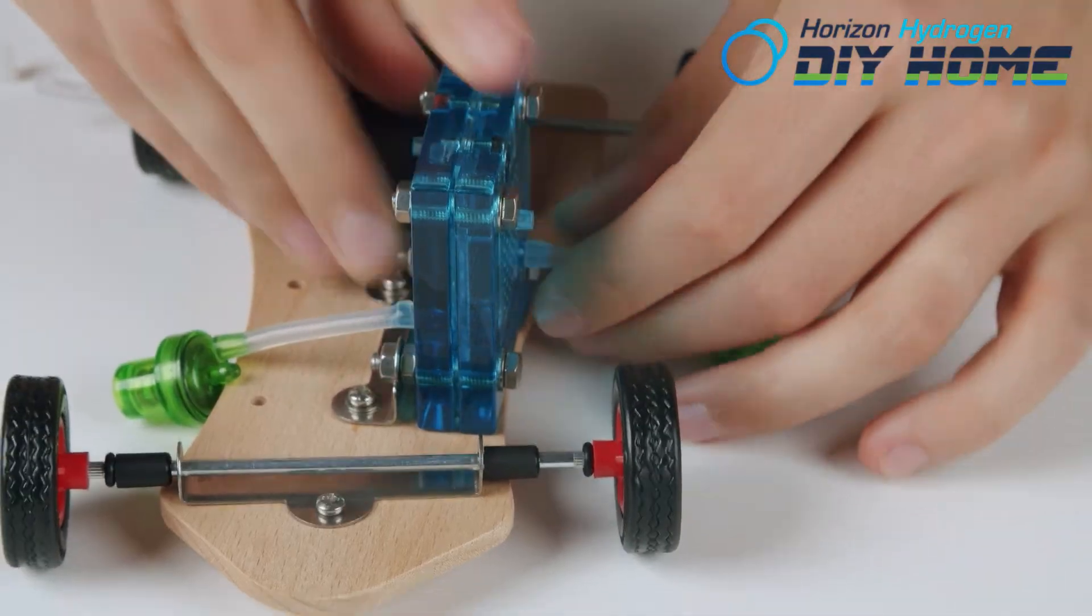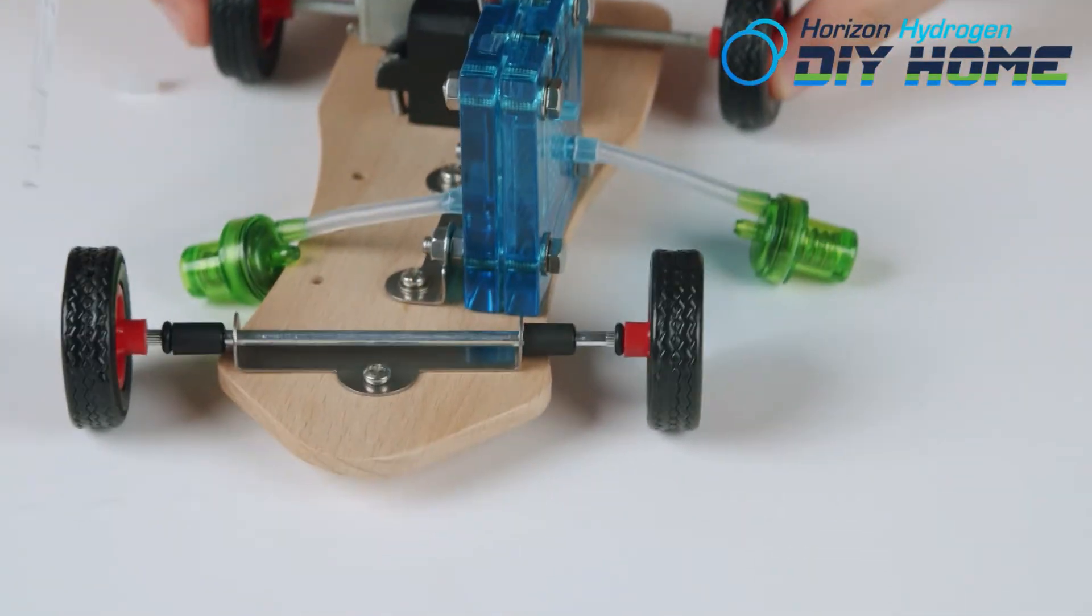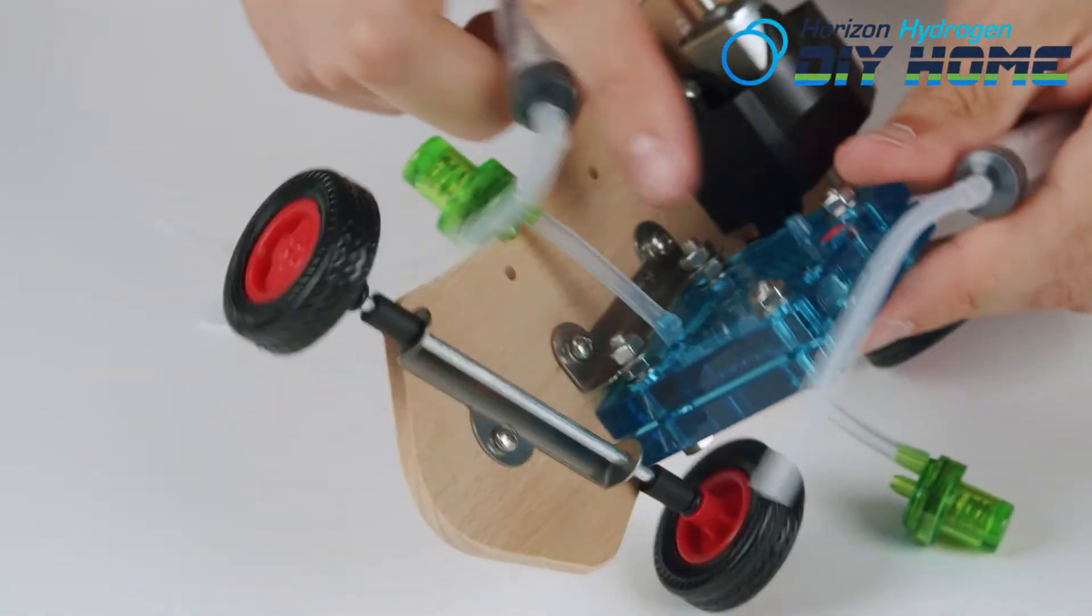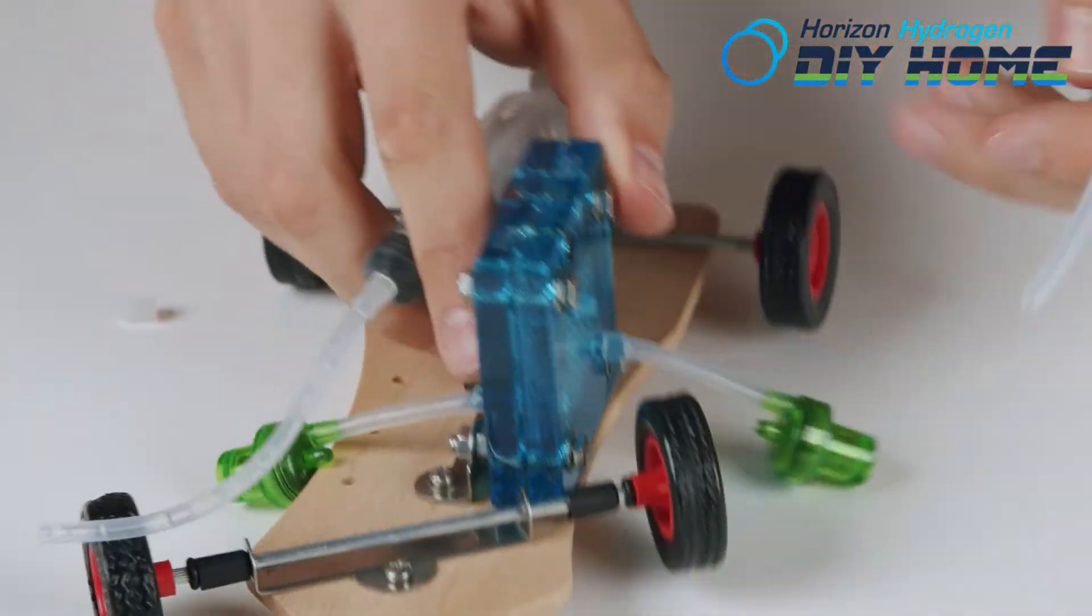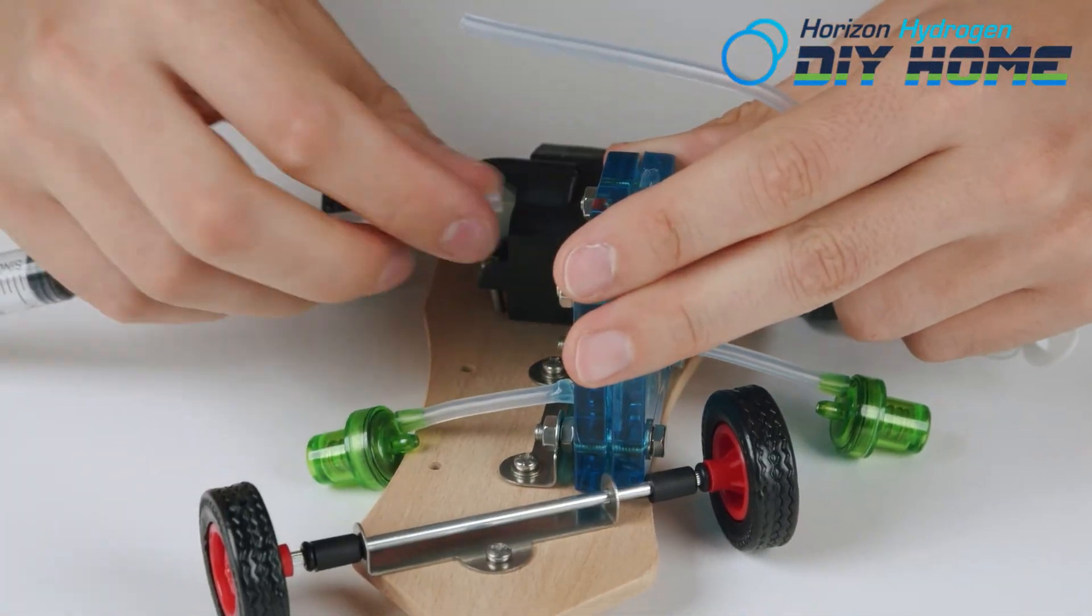Discard remainder of distilled water from syringe. Install both syringes to top valves. They should both be closed.